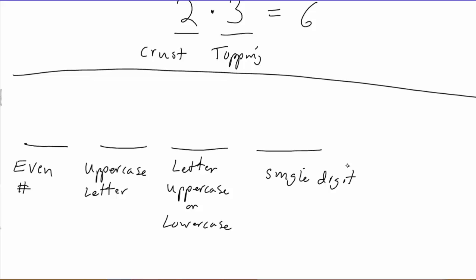We can analyze this by looking at each choice individually and counting how many options we have. For the first choice — a single even digit — the possibilities are 0, 2, 4, 6, or 8. Those are the only even single digits, so that's five possibilities. For an uppercase letter, there are 26 letters, so we have 26 options. Now, if we're choosing a letter that could be uppercase or lowercase, there are 26 letters but we double that, giving us 52 options.